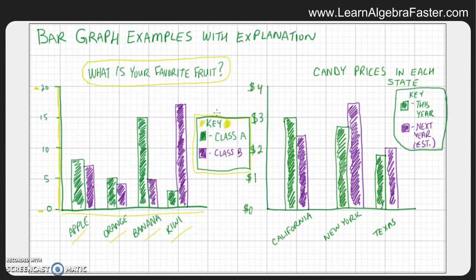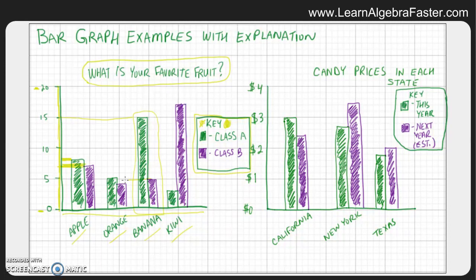When we look at the chart, we can see that class A shows eight people say apple is their favorite fruit, and seven people in class B say apple is their favorite. Apples are about the same, oranges are about the same, but when we get to banana we see a lot more people in classroom A like bananas — 15 people — while only five people prefer kiwis.